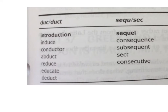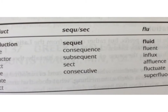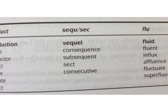Over here we have 'sequel,' 'consequence,' 'subsequent,' 'sect,' and 'consecutive' — and those all have to do with 'follow.' A sect is like a following; I think of the different sects in a religion, like in Christianity there are Baptists, Lutherans, and Protestants — those are different sections or followings. A sequel is the following movie. A consequence is what happens following an action. Subsequent is the next thing that happens, and consecutive means things in order. So those all follow or are in order.